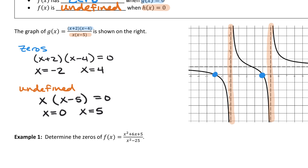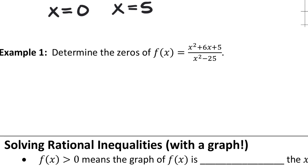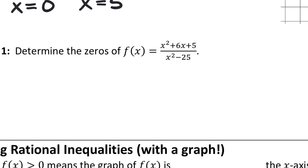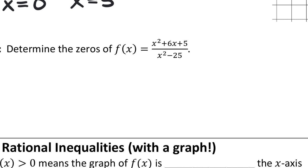What if you don't have a graph and the function isn't in factored form? The first thing to do with a rational function is factor. To determine the zeros, we look for where the numerator equals zero, but you need to factor both the top and bottom every single time.